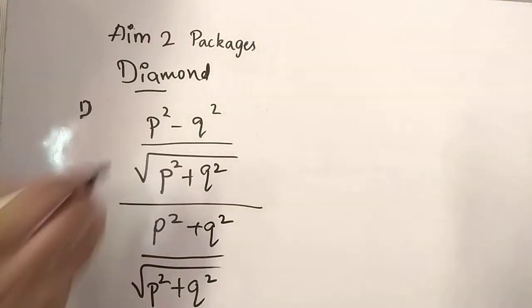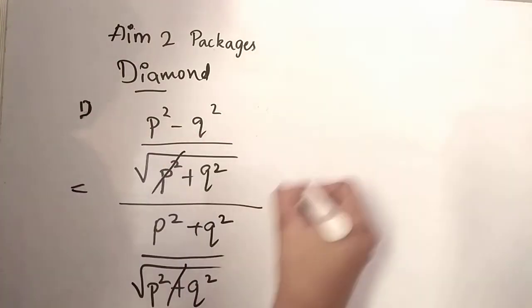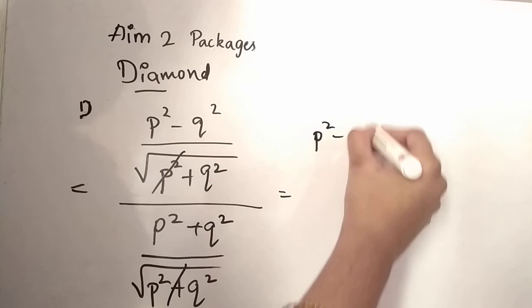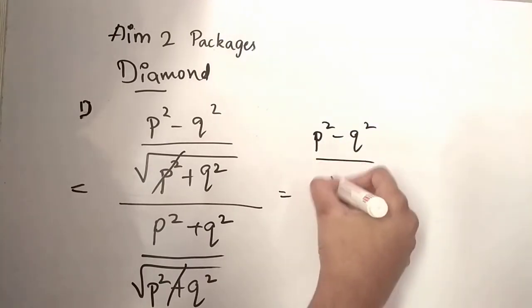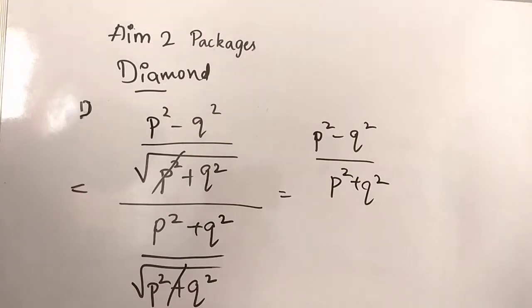Now, here when you make reciprocal, obviously these two terms will be cancelled. So answer is P square minus Q square divided by P square plus Q square. Okay, now we will see next question. And option is C, okay.